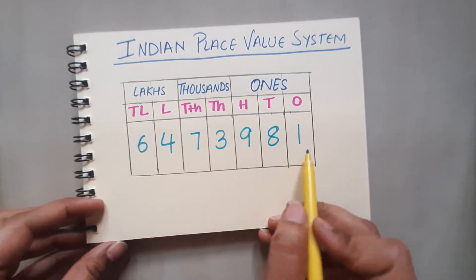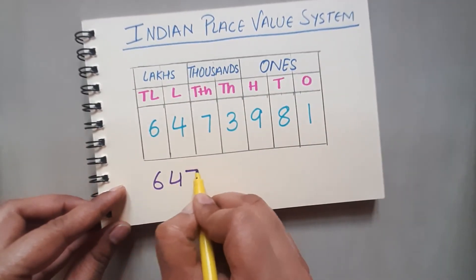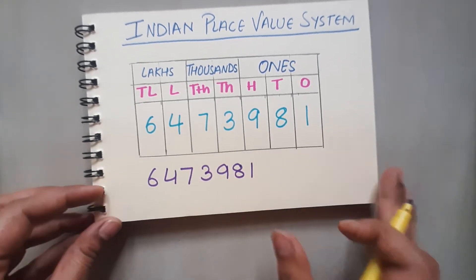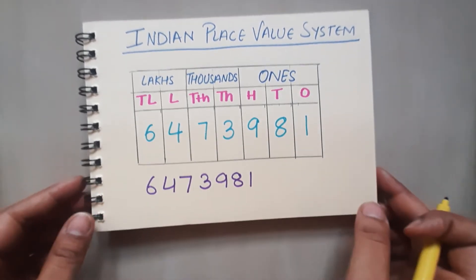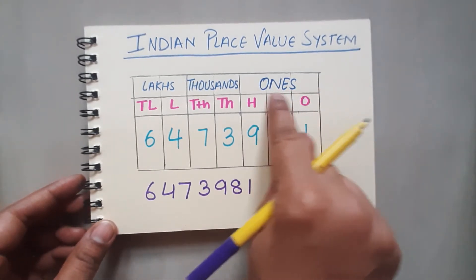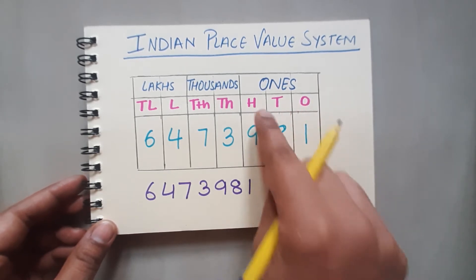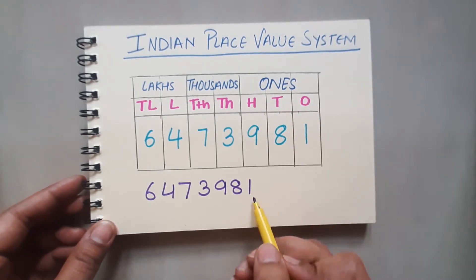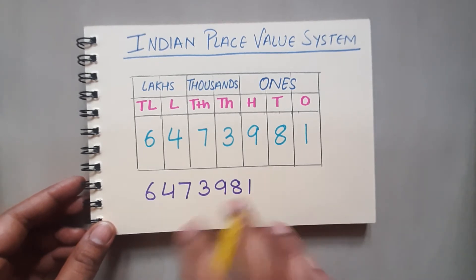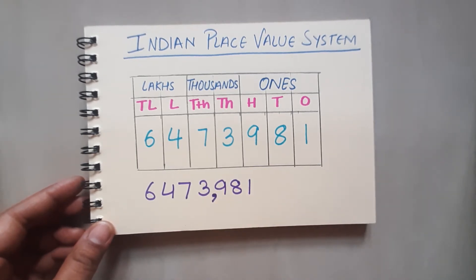Now why do we have periods? Periods help us to read a large number. Suppose this is the number I have given to you. How do we mark periods? We mark periods by putting commas. Here this is my ones period, and I have ones, tens, and hundreds in ones period. So I am going to look over here — this is ones, tens, and hundreds.